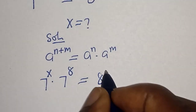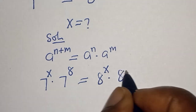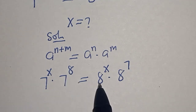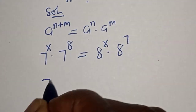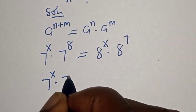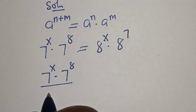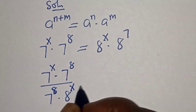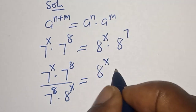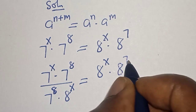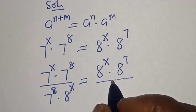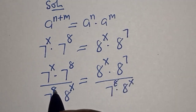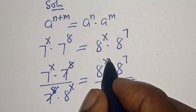This is equal to 8 raised to the power x plus 7, which can also be written as 8 raised to power x multiplied by 8 raised to power 7. Now let's divide both sides by 7 raised to power 8 and 8 raised to power x. After cancellation, terms cancel out on each side.